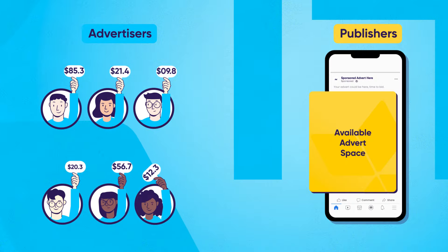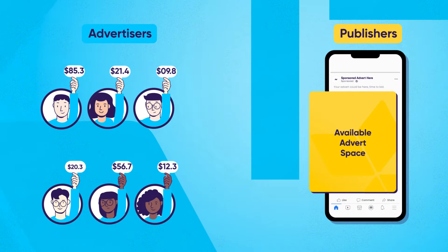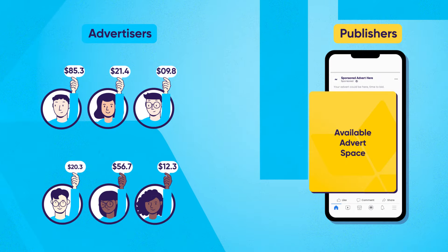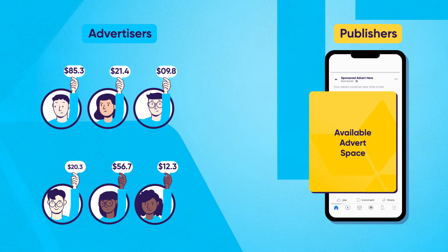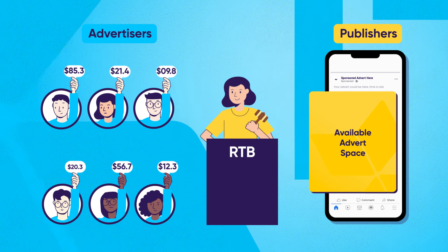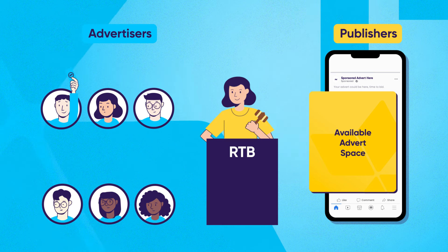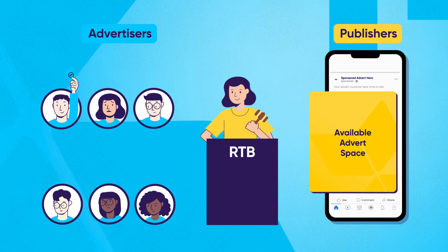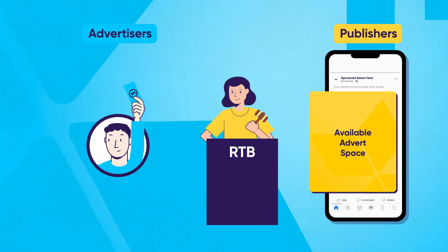As soon as a user lands on the page, the SSP puts the impression up for auction. If it matches an advertiser's audience and budget criteria, their DSP will automatically place a bid. The winning bid is shown to the user by the time the page loads.